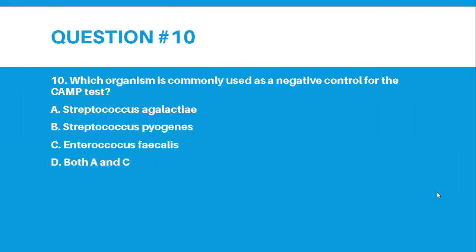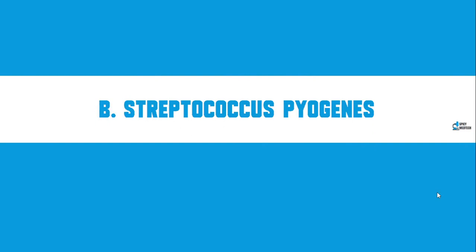Number 10. Which organism is commonly used as a negative control for the CAMP test? Letter A, Streptococcus agalactiae. Letter B, Streptococcus pyogenes. Letter C, Enterococcus faecalis. Letter D, Both A and C. And the correct answer for number 10 is letter B, Streptococcus pyogenes.